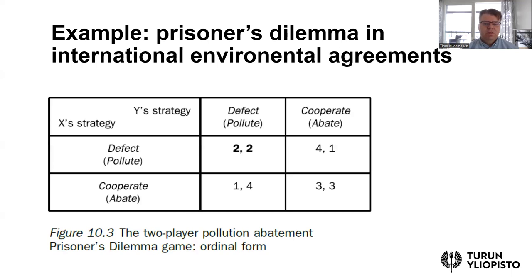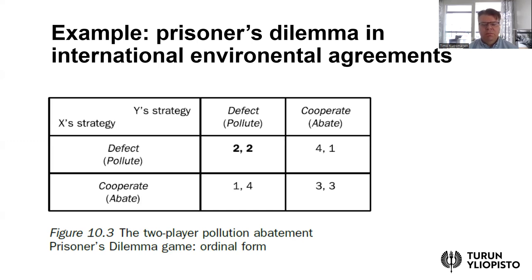This matrix, called the payoff matrix, indicates the payoffs that we can think of as indicating not only the GDP, but also the damages from global warming and all kinds of damages from storms and other natural disasters, and perhaps also deteriorating environmental quality. So the payoffs take into account everything relevant to societal well-being, not only GDP.